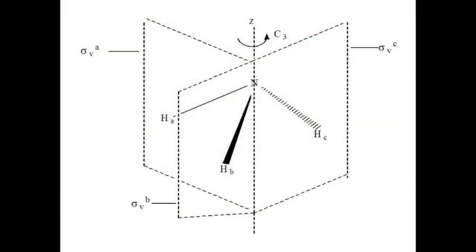It has six symmetry elements. E, the trivial element present in each group, is the identity element. C3 is the axis of rotation. With its consequence, there are symmetry elements C3I and C3II — that is, C3I stands for a 120-degree rotation and C3II stands for a 240-degree rotation.